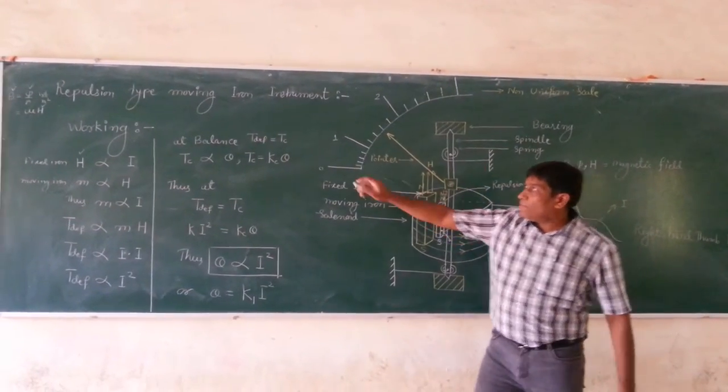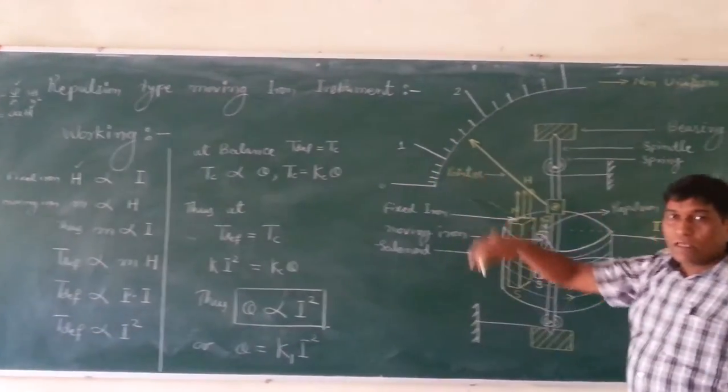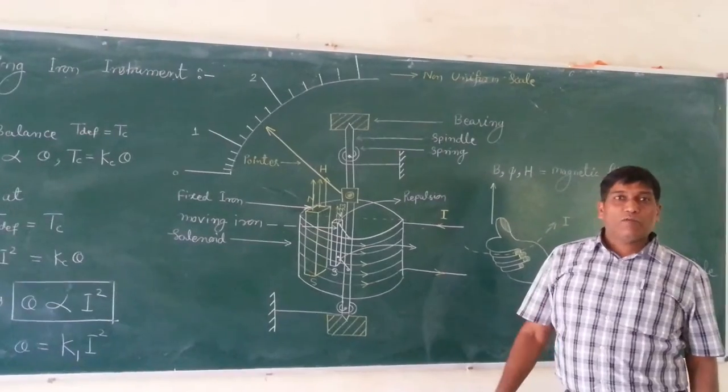We will understand the repulsion type of moving iron instrument. Particularly if we are seeing the repulsion type of instrument, it is similar to other instruments.